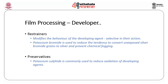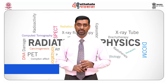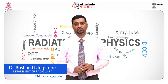Temperature is important in developer processing. In automatic processors, temperature can be adjusted based on the type of imaging performed. Maintaining a temperature between 38°C and 42°C takes about 90 seconds of processing time using an automatic processor, but it increases image density, chemical fog, and image contrast. If temperature is reduced to around 30°C, chemical fog is reduced but image contrast also decreases.